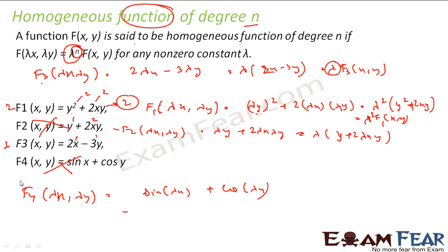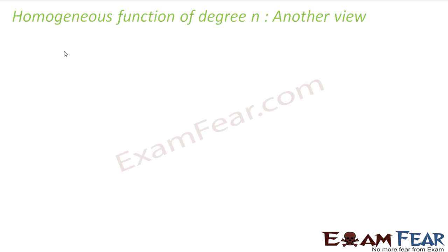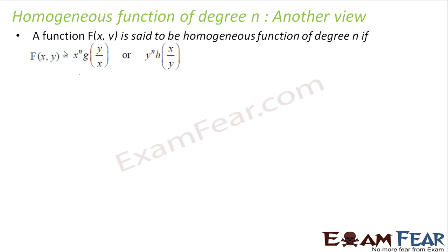With these examples, it should be clear what a homogeneous equation is: the power is always constant across all terms. We can write f(λx, λy) = λⁿ · f(x, y), where n is the degree. There is also another view: a function f(x, y) is homogeneous if it can be written as xⁿ · g(y/x) or yⁿ · h(x/y).